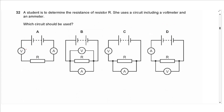Question 32: To determine resistance R using a voltmeter and ammeter, voltmeters must be connected in parallel and ammeters in series. Option A has both in series, B has both in parallel, C has voltmeter in series and ammeter in parallel. Answer is D — voltmeter in parallel, ammeter in series.